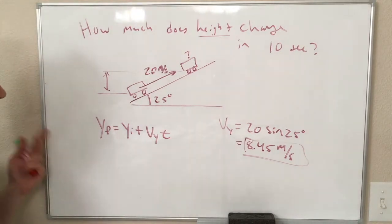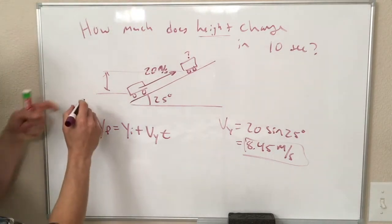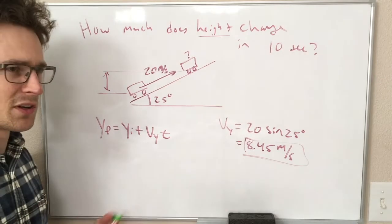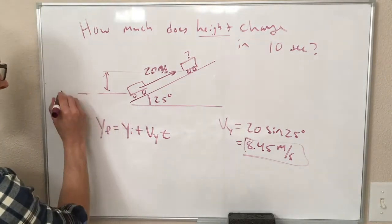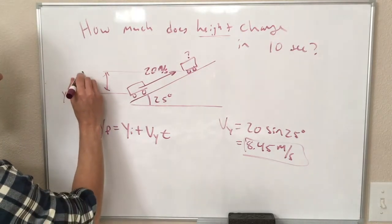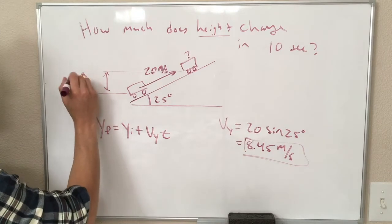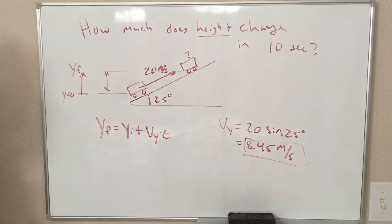Okay, so this is great, we can call this, if one of our steps is define your coordinate system, so we'll call this y equals 0, and it's going up to some y final that we want to find.